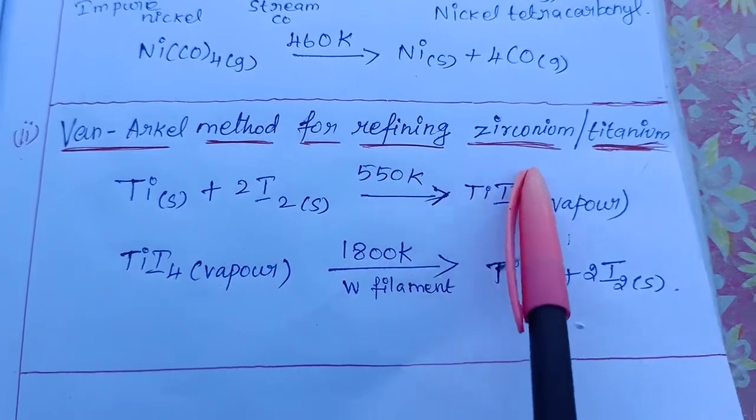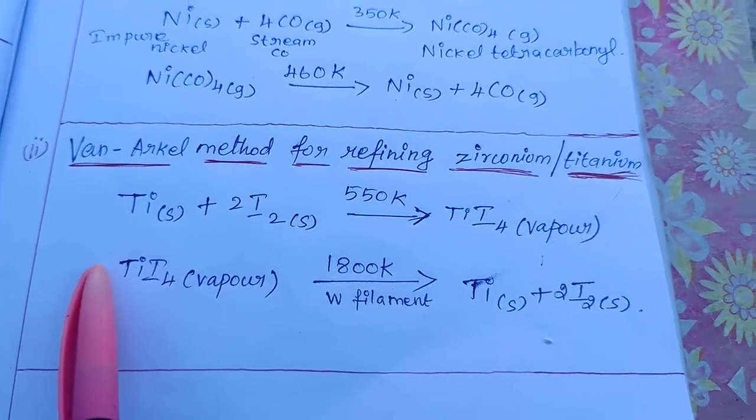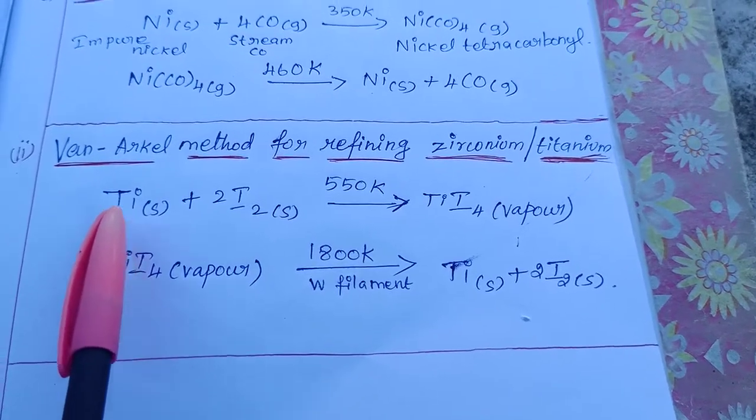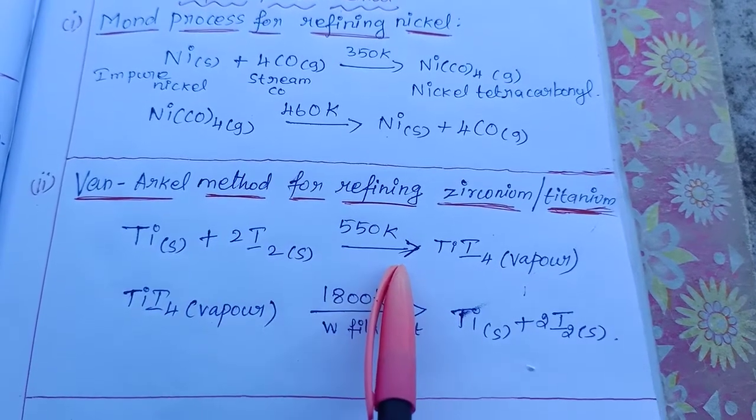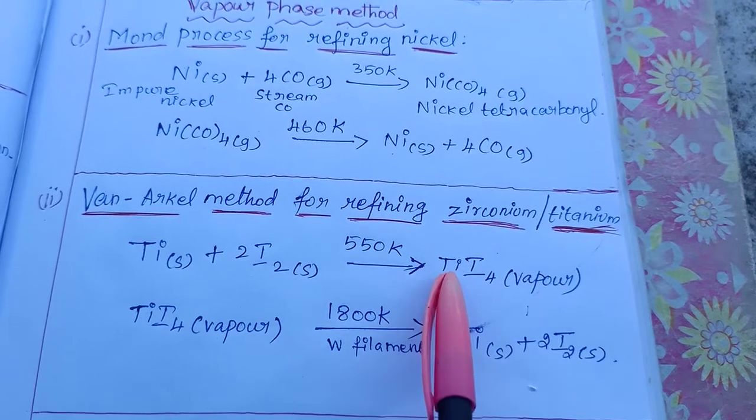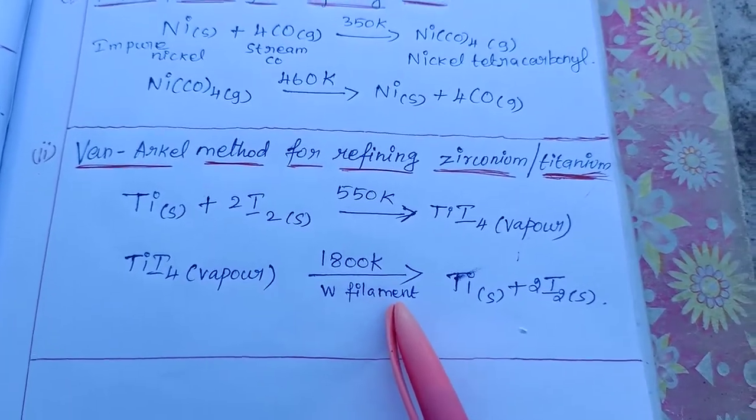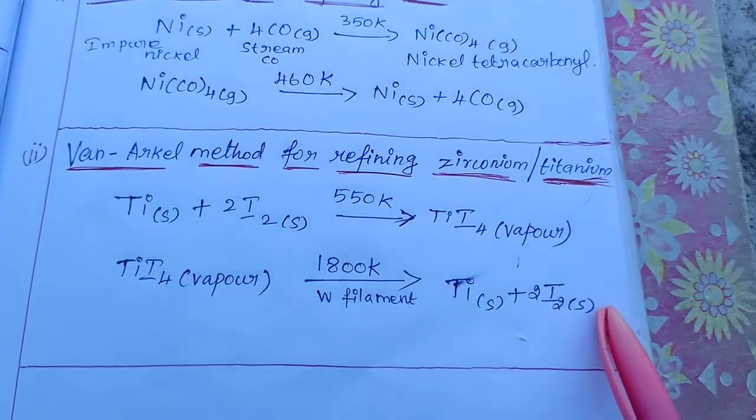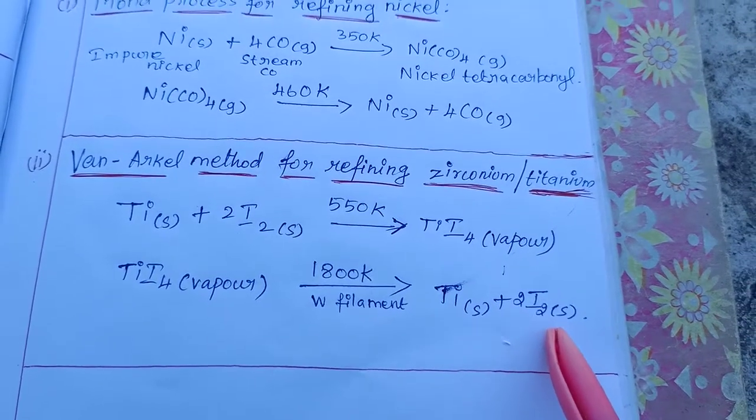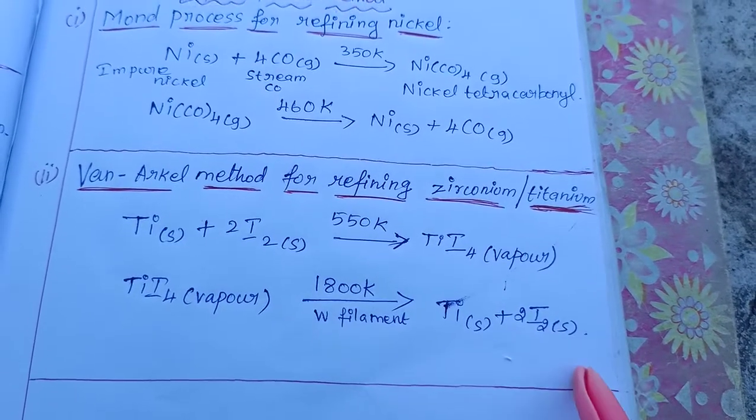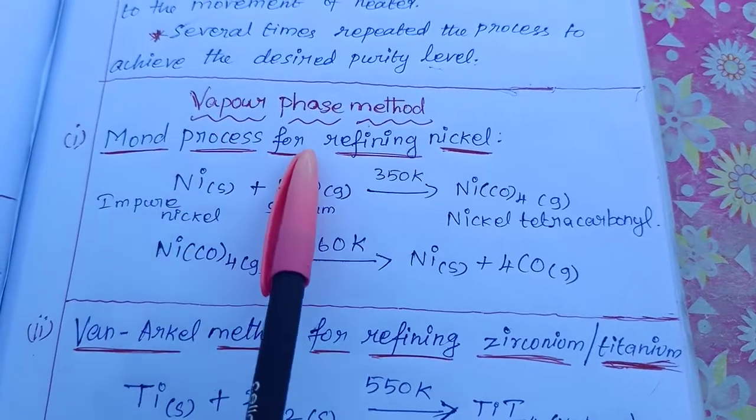The Van Arkel method is for refining zirconium and titanium. For titanium, impure titanium reacts with iodine heated at 550 Kelvin to form titanium tetraiodide TiI₄ in vapor state. The titanium tetraiodide vapor decomposes using a tungsten filament heated at 1800 Kelvin to form pure titanium on the filament. The iodine is then reused in the process. This is the Van Arkel method for refining zirconium and titanium.